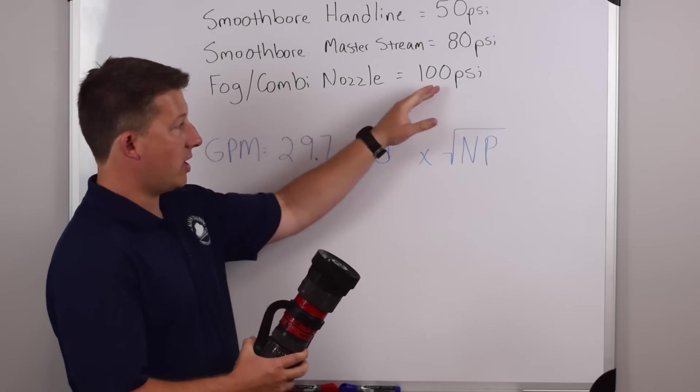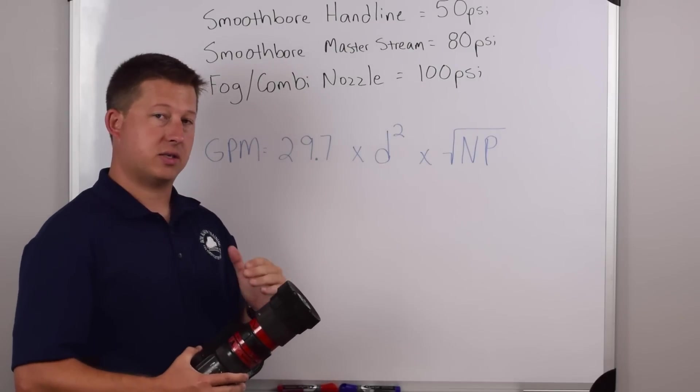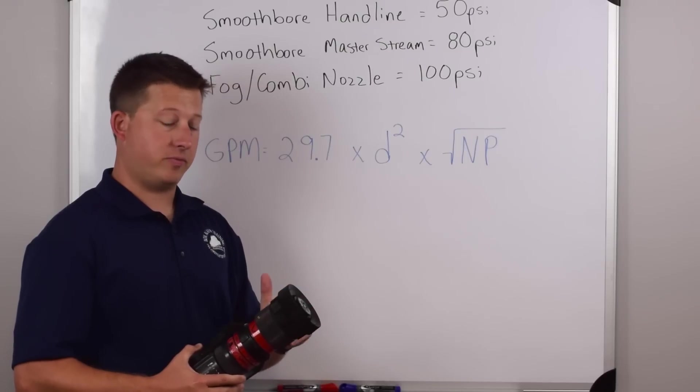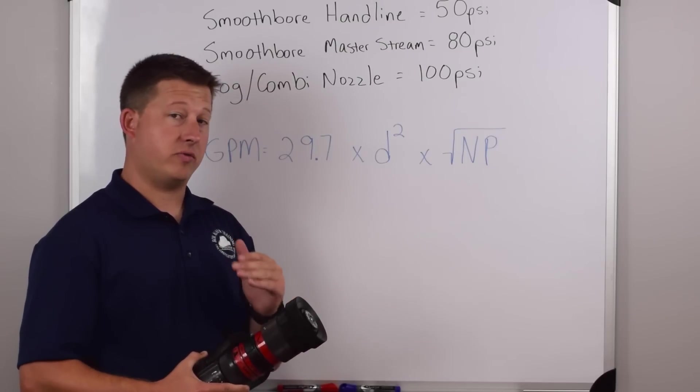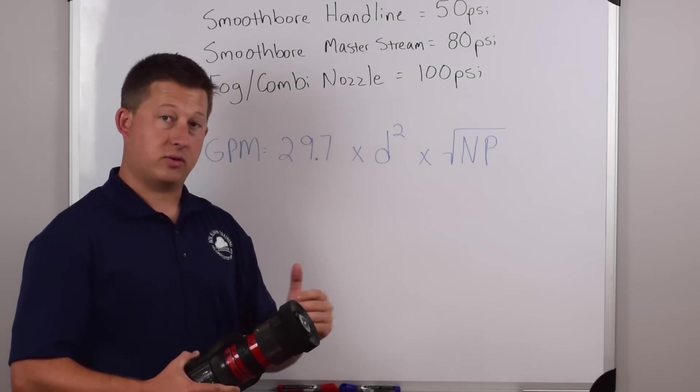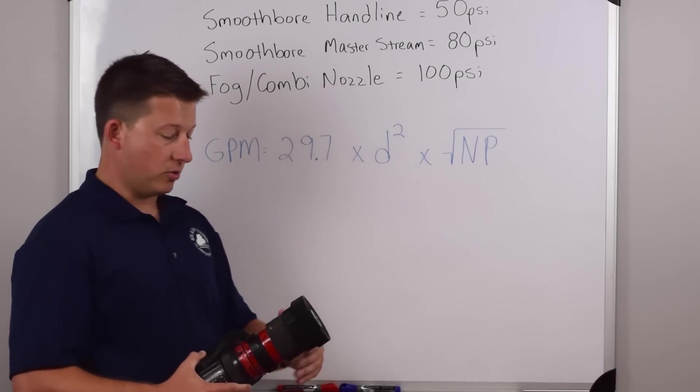As long as you get the proper nozzle pressure, if it's a 100 PSI fog nozzle, it should flow that amount of water. Now the only way for you to truly know if that's correct is for you to flow test your nozzles and see if they are correctly flowing what they should be flowing.